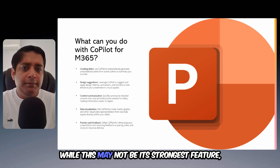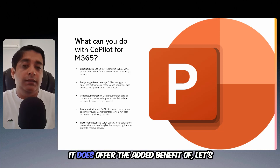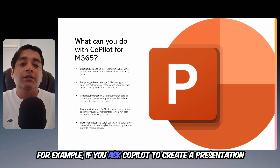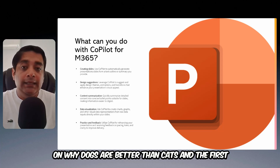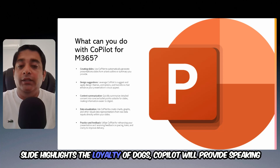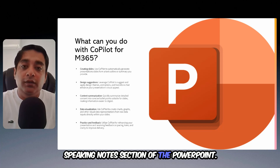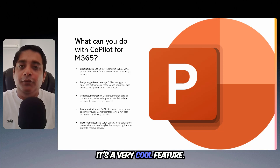While this may not be its strongest feature, it does offer the added benefit of generating speaking notes for each slide. For example, if you ask Copilot to create a presentation on why dogs are better than cats and the first slide highlights the loyalty of dogs, Copilot will provide speaking notes on what to say on that slide in the speaking notes section of PowerPoint. It's a very cool feature.